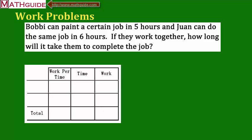If we have two people working on a project, sometimes it's important for a supervisor to know how to gauge how much time it's going to take those two people to complete a job. Let's say we have Bobby here. Bobby can complete a job, a painting job, in five hours. Juan can do the same job in six hours. So this is if they were to work independently on these projects.